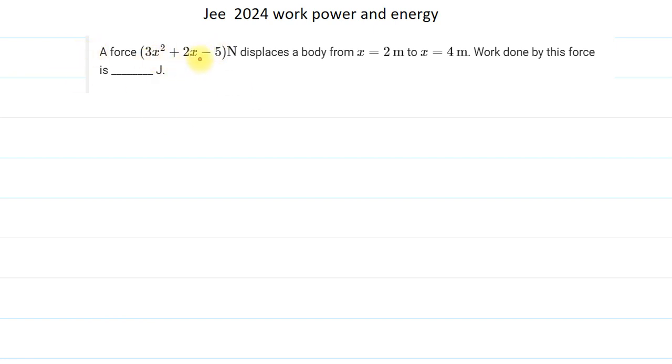The force is given to us and you can see the force is variable. Force is a function of x. This force displaces a body from x equals 2 meters to x equals 4 meters. Find the work done in this process.